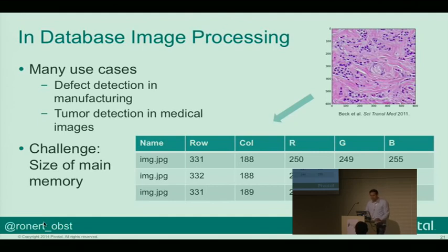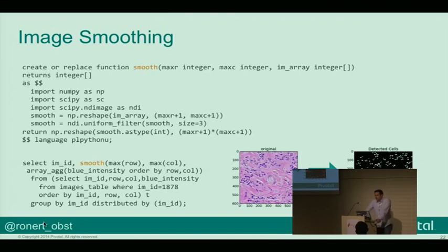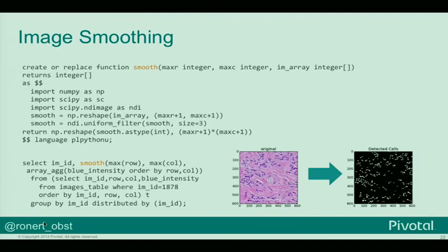There are also use cases such as detecting malfunctions in manufacturing. She defined a function called smooth and used the uniform_filter from scipy to apply the smoother to the image. Up in the select statement, she just calls this Python function to smooth the image. This would be really difficult to implement in pure SQL, and we can really leverage our Python experience here to get these things done.